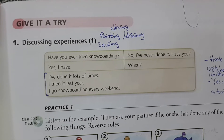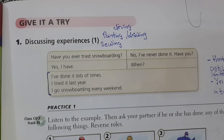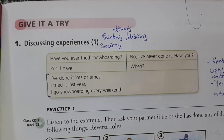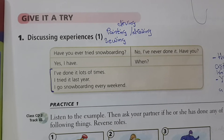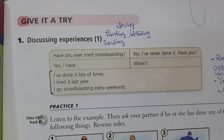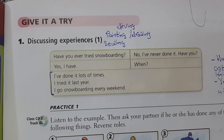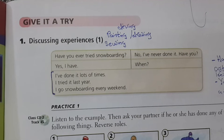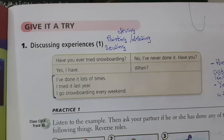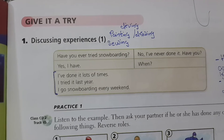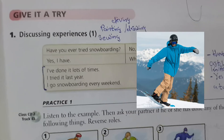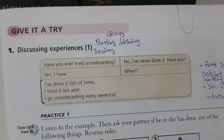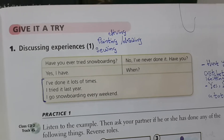In order to ask other people about their athletic experiences, we use this linguistic construction: 'Have you ever tried snowboarding?' This is the present perfect tense — 'Have you ever?' The negative answer might be: 'No, I've never done it.'